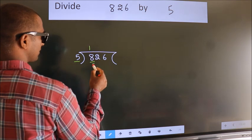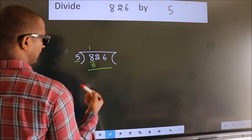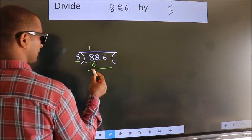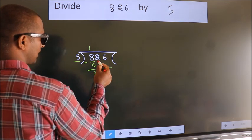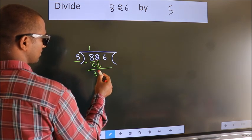5 once is 5. Now we should subtract, we get 3. After this, bring down the beside number, so 2 down.